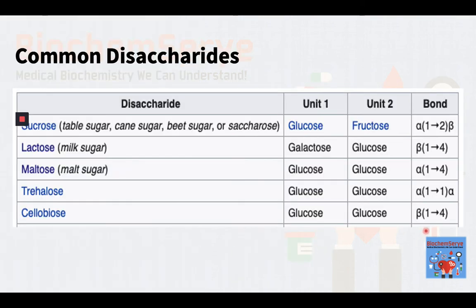Here is a table summarizing the monosaccharide components of the different common disaccharides and their specific glycosidic bonds.